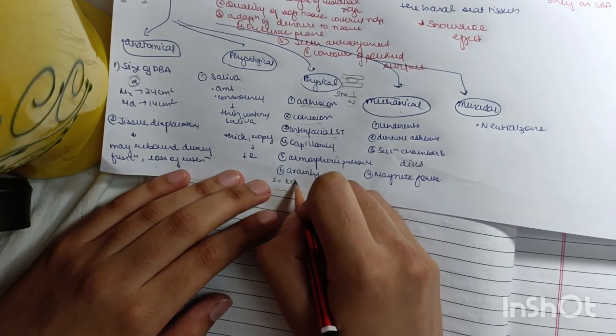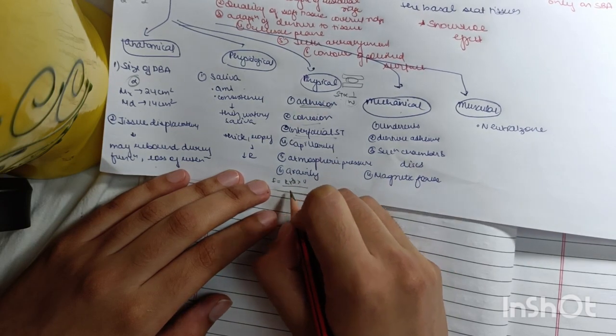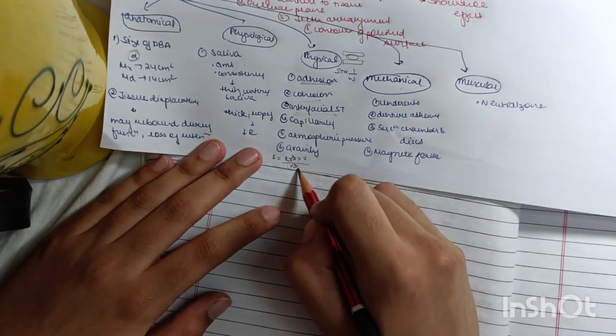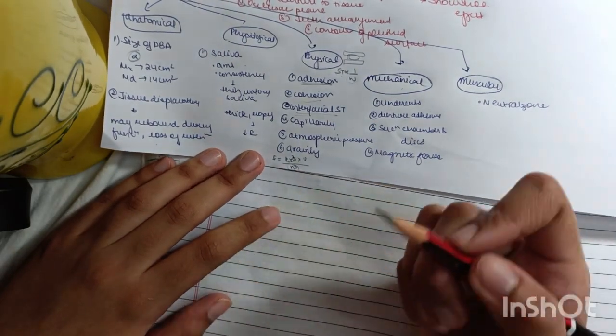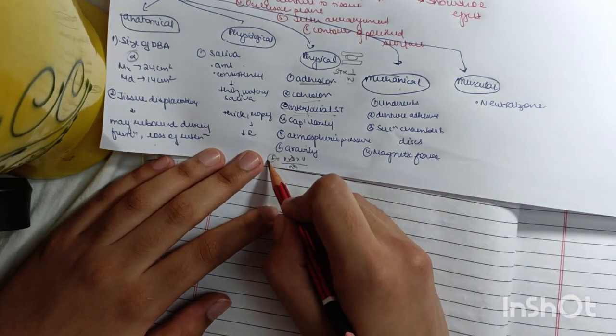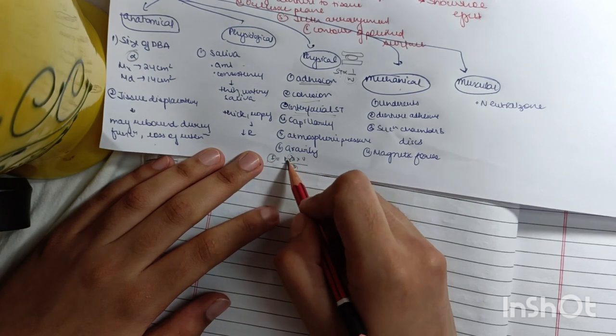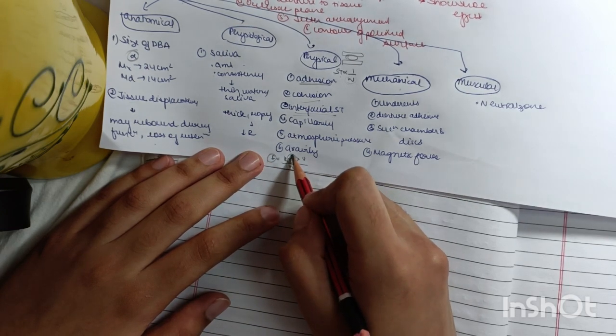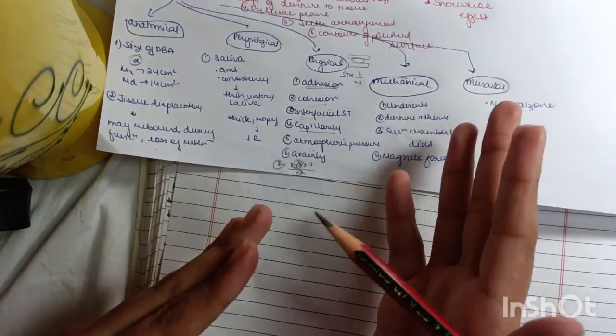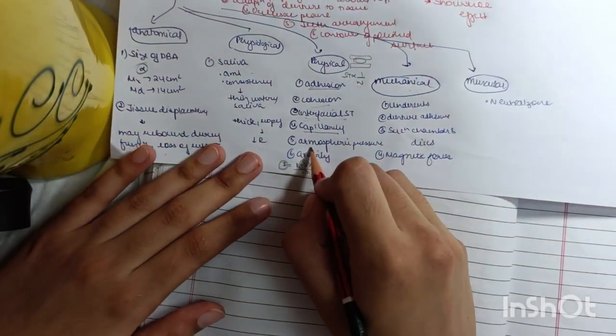Remember this formula: K times R to the fourth divided by R cubed, I think, into V times H cubed. Now what is H? H is the distance. The closer the denture base and the saliva, the more is the force surface tension. The higher the diameter of the surface, the more is the surface tension. Capillarity: the ability to push the liquid up or down. Atmospheric pressure, gravity.